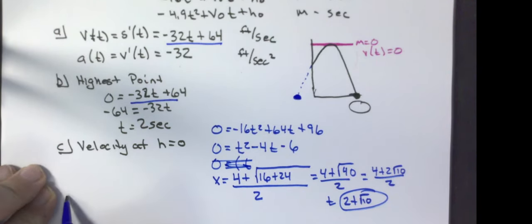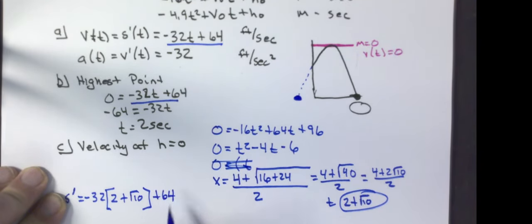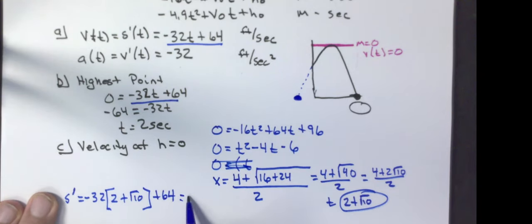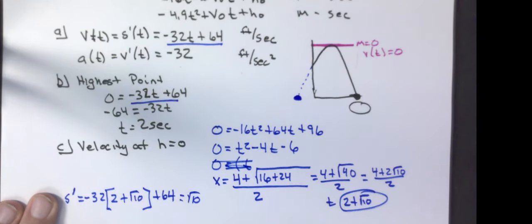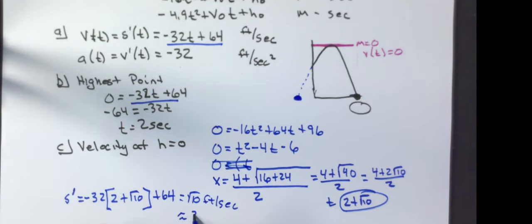So my S prime is equal to negative 32 times time, which is 2 plus the square root of 10, plus 64. Negative 32 times 2 is negative 64. Negative 64 plus 64 is 0. That's going to give me negative 32 times the square root of 10, and I'm in feet per second. The square root of 10 is approximately 3.16 feet per second.